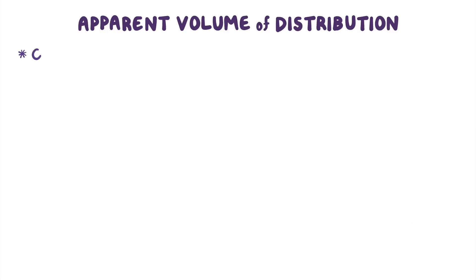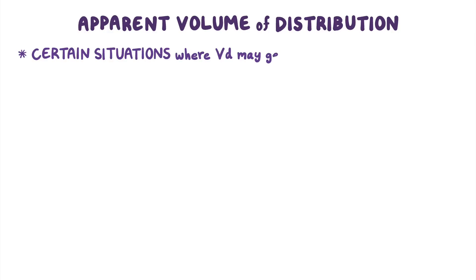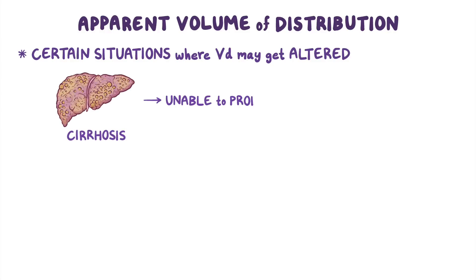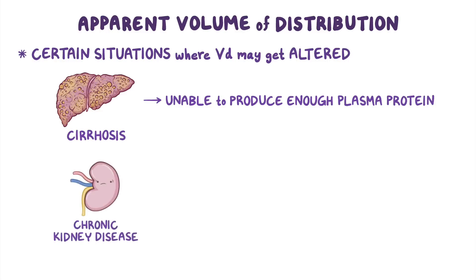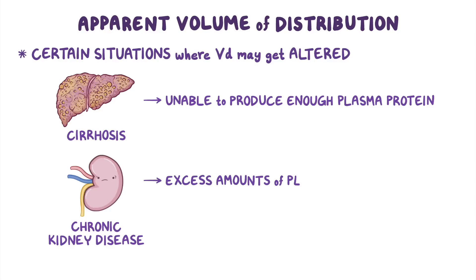There are certain situations where this apparent volume of distribution may get altered. For example, in chronic liver diseases like cirrhosis, where the liver is unable to produce enough plasma protein, or in certain kidney conditions like CKD or chronic kidney disease, where excess amounts of plasma proteins get filtered out through urine, the amount of plasma protein-bound medication gets reduced substantially, therefore increasing the VD.